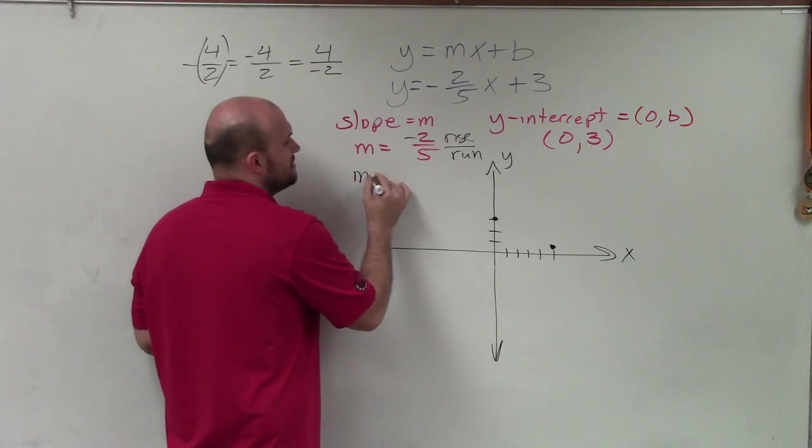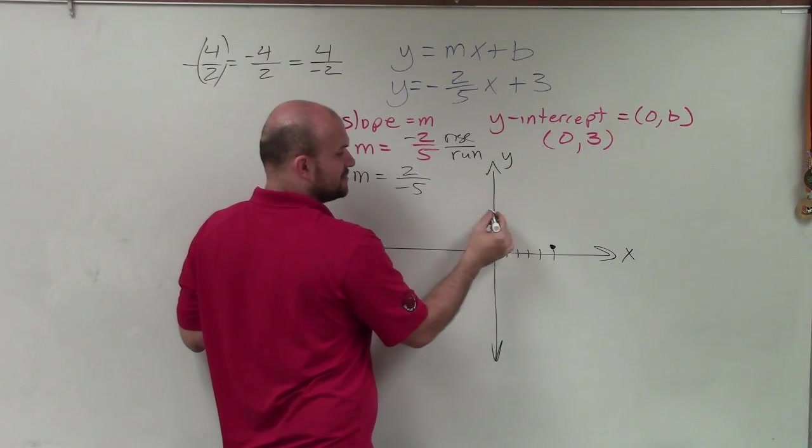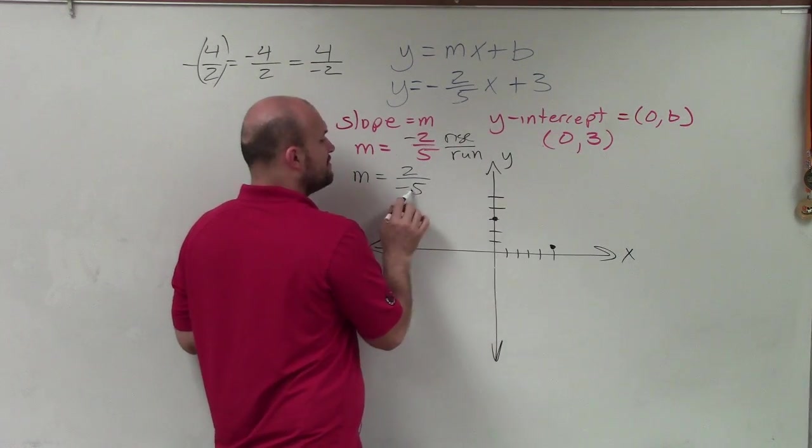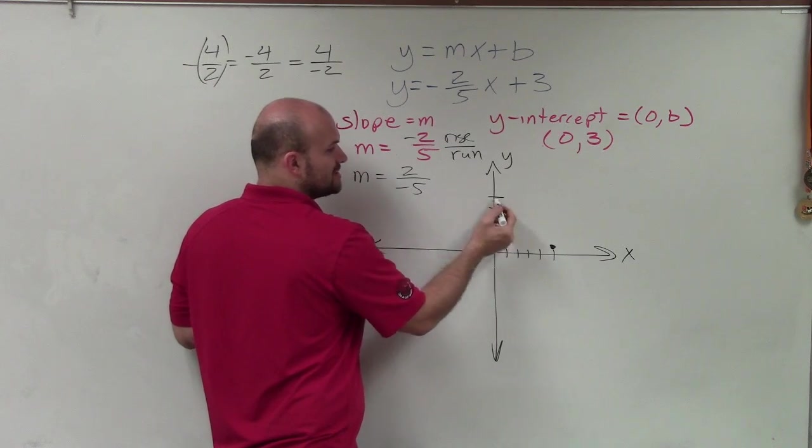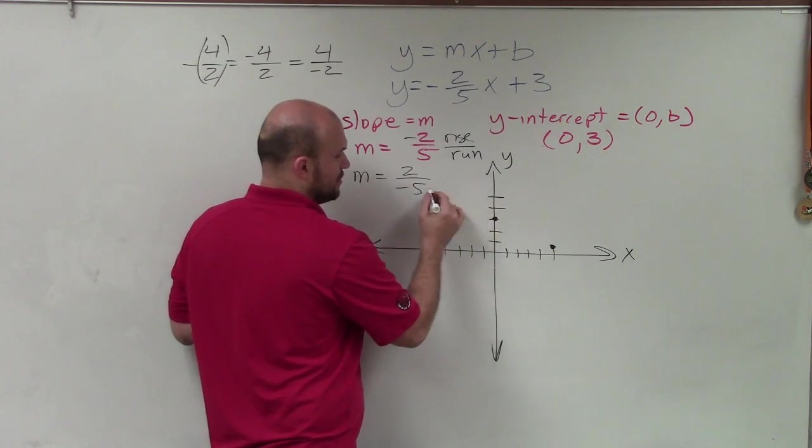Now let's pretend my slope was positive 2, negative 5. Well then, my change in my y is positive 2, so I'm going to go up 2. And then my change in my x is negative, so I'm going to go to the left 5: 1, 2, 3, 4, 5. So negative 2 over 5.